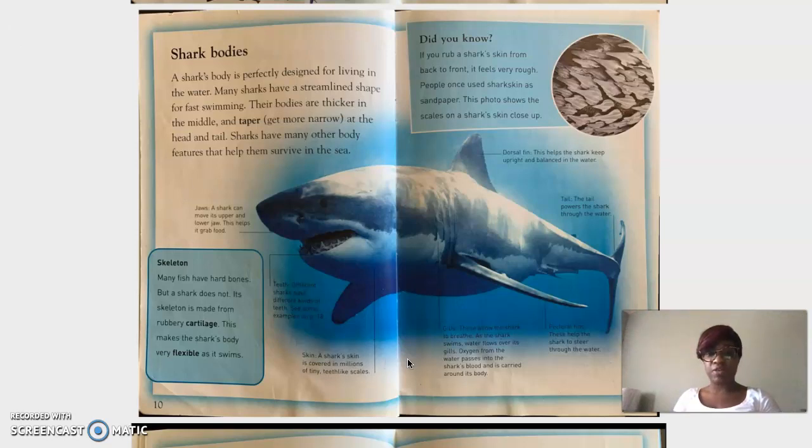Now, let's take a look at this diagram. This is a text feature the author has included. Not only did the author include a big photo of a shark, and I think that's a great white shark. I'm not sure. But guess what? Look at these long lines connected to information. That means we need to read every single part.